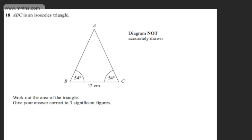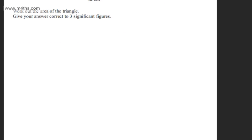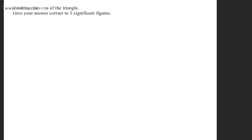This is question number 18. We're told ABC is an isosceles triangle. We're asked to work out the area of the triangle and give our answer correct to three significant figures. The question carries four marks.